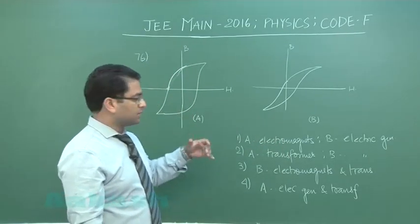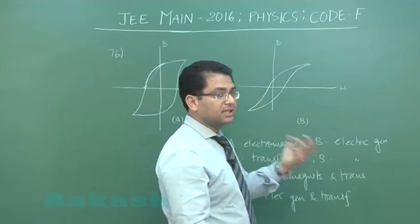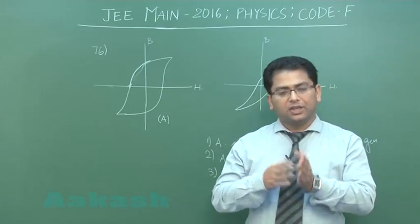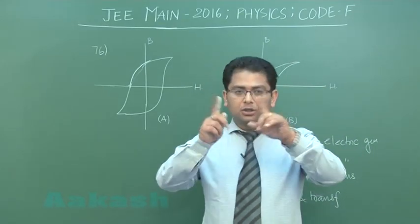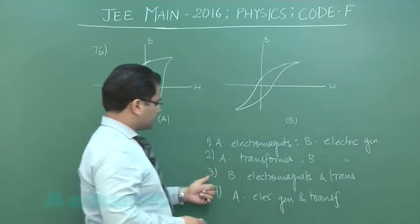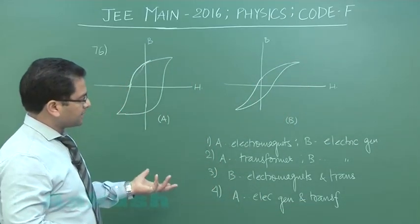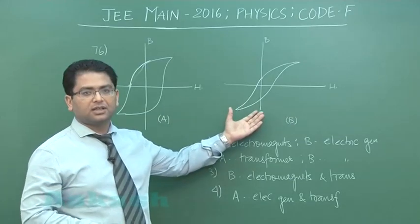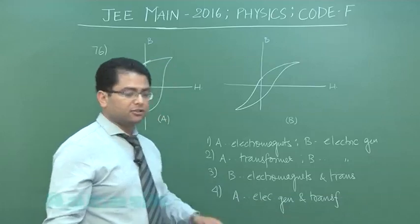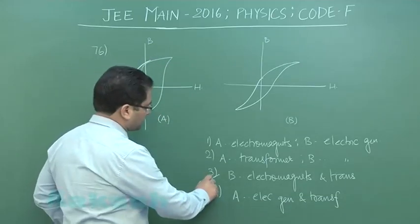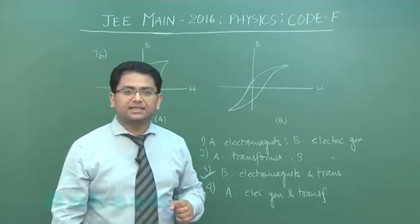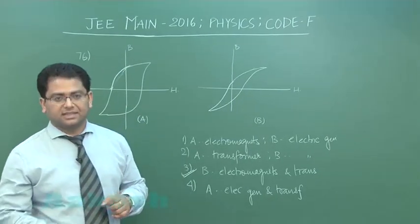A transformer also has constant magnetization and demagnetization because it works on AC. So even for a transformer, the hysteresis loop should have a smaller area. Therefore, option 3 seems to be the best — B, which has a smaller hysteresis area, is suitable for both electromagnets and transformers. The correct option is option number 3. That was question 76; we'll move to question 77.